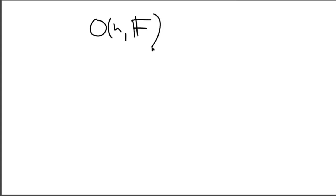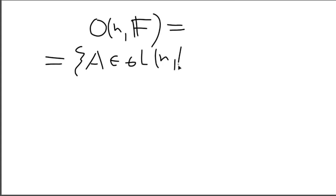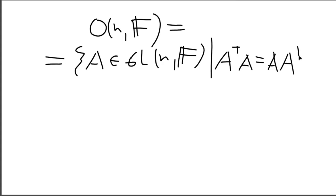The General Linear Group, denoted GL, is a group of matrices of some fixed size. The General Orthogonal Group shares the same parameters — the size of the matrix and the field of its entries — and it is a subgroup of the General Linear Group. It is the set of matrices A in GL(n, F) such that A-transpose equals A-inverse. That is the key property: for an orthogonal matrix, the transpose acts as the inverse.